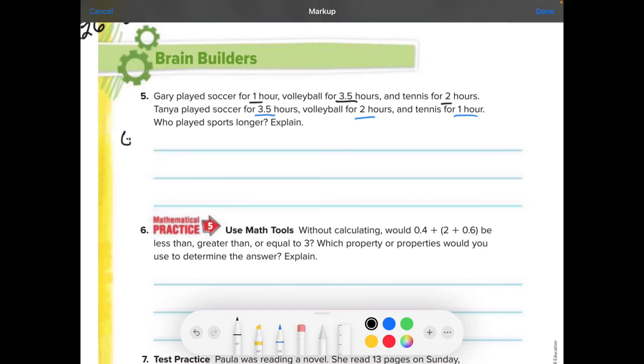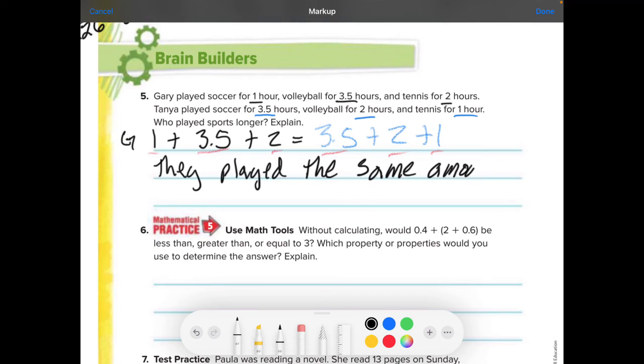So let's kind of write them down. I'm going to write down that Gary did one hour plus 3.5 plus 2. And then Tanya, she did 3.5 plus two hours plus one hour. Well, if I'm looking at this, I can see they both have a one, they both have the 3.5 and they both have a two. So who played for longer? I'm going to say they played the same amount of time. And it was a commutative property that was used because the order does not change.